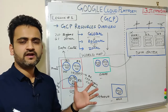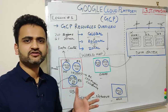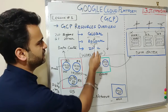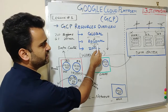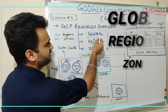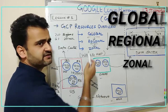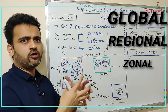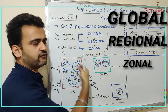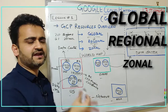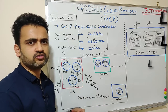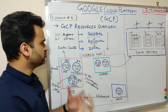Google Cloud Platform divides its resources into three main categories: global, regional, and zonal. Global is a parent set under which falls regional, and within a regional resource falls a zonal resource.